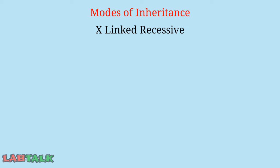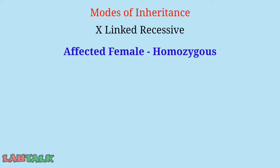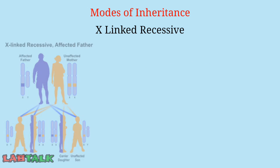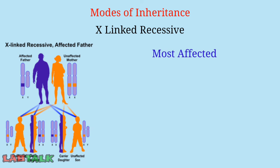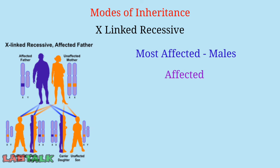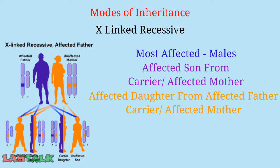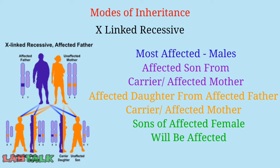In X-linked recessive inheritance, a female becomes affected only if she carries two defective alleles on the X chromosome, i.e., she is homozygous. A male becomes affected even if he carries just one defective allele on the X chromosome, as there is no counterpart allele on the Y chromosome. Key features: most affected individuals are male; affected sons always come from carrier or affected mothers; affected daughters come from affected fathers and carrier or affected mothers; and there is a 50% chance for each son of a carrier female to be affected.